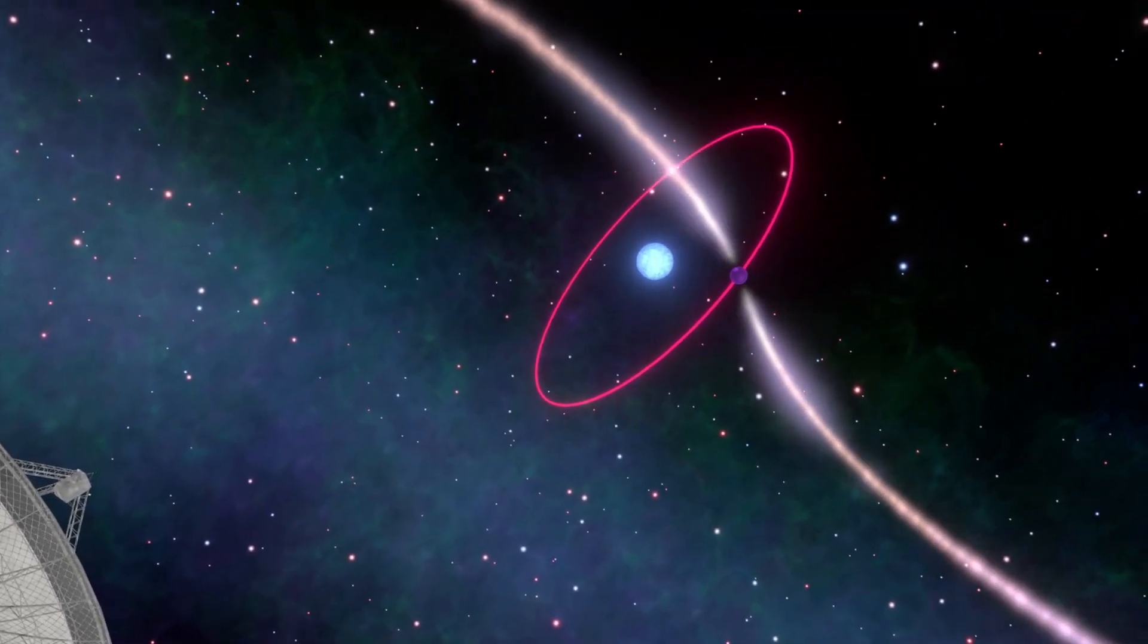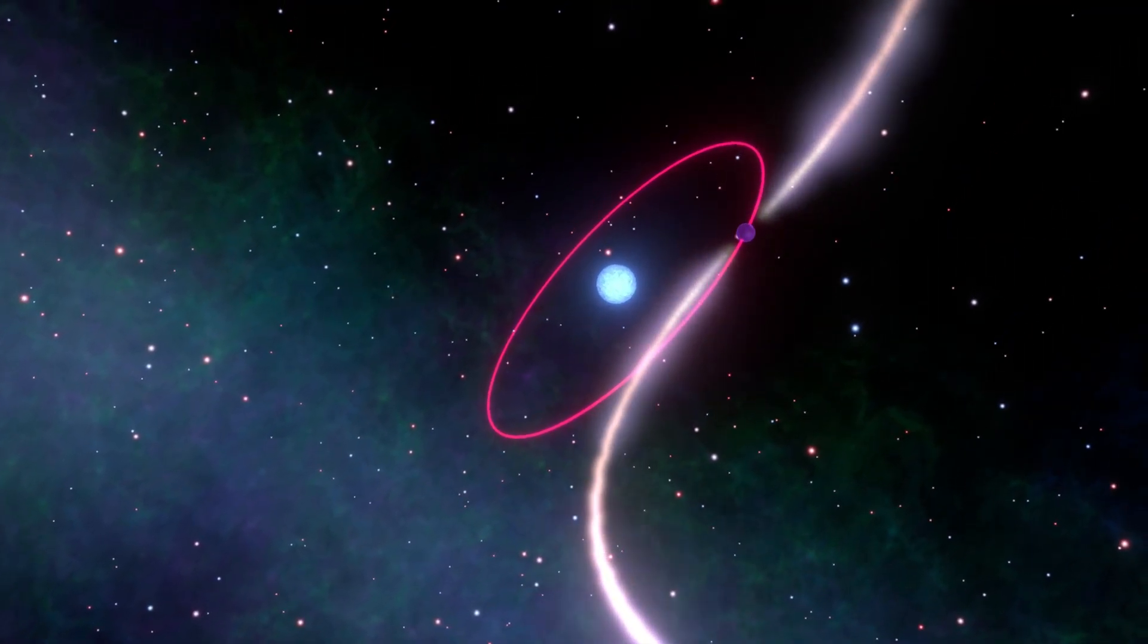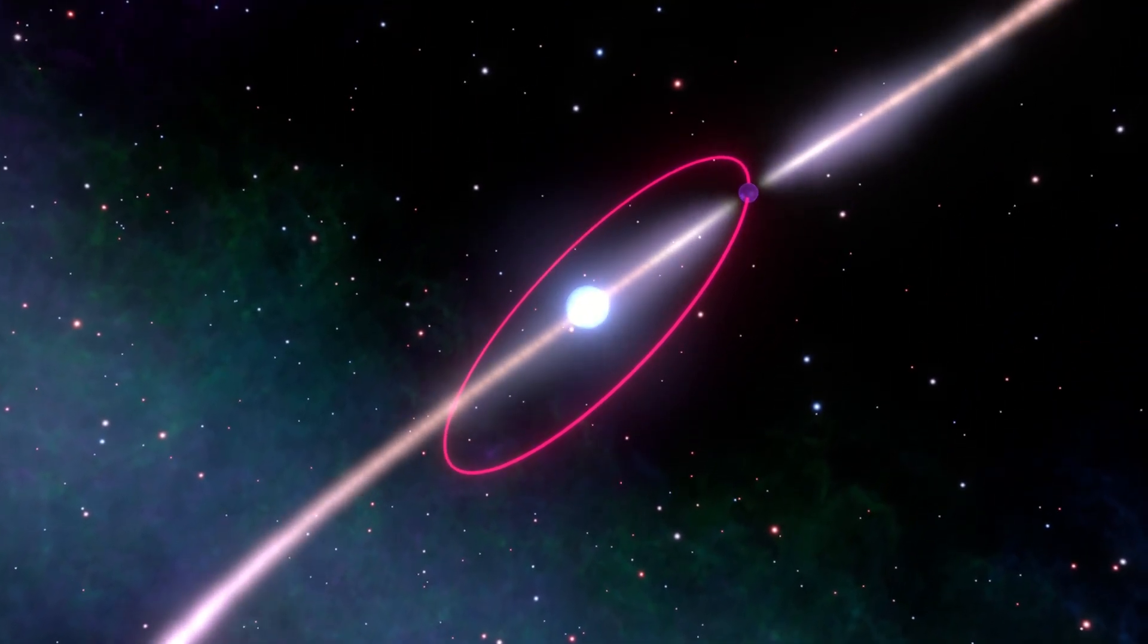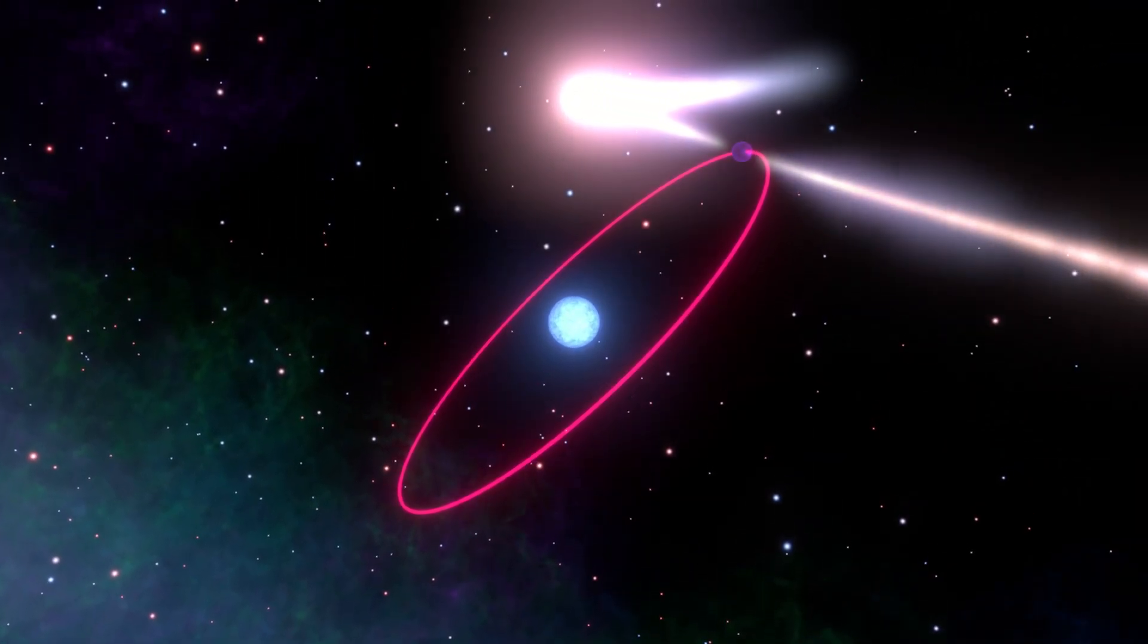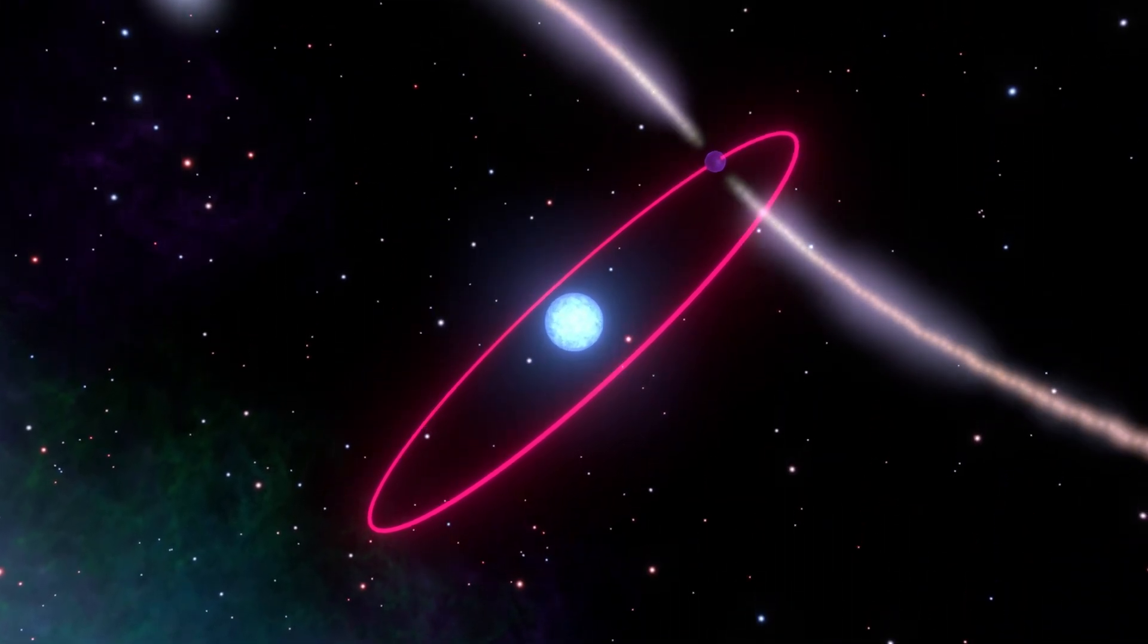The system comprised a white dwarf a few hundred thousand times the mass and density of the earth and an exotic neutron star in the form of a pulsar locked in a tight five-hour orbit.